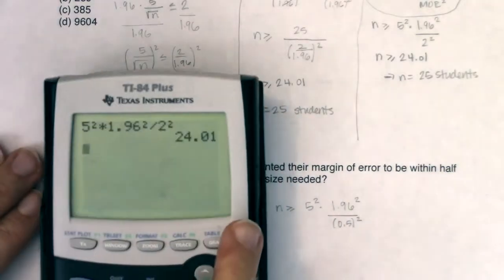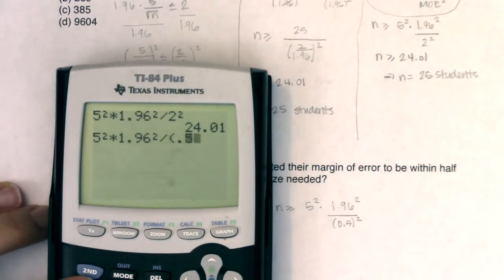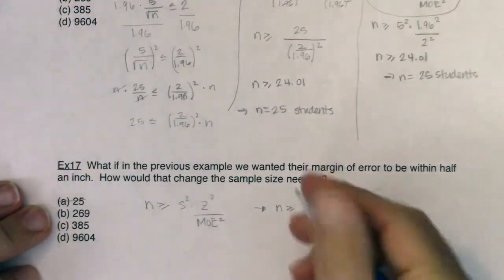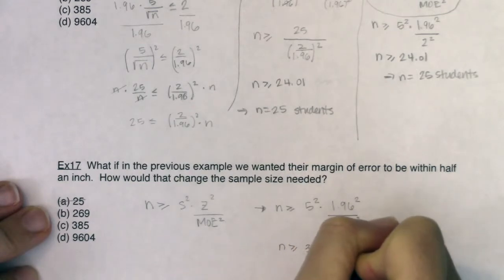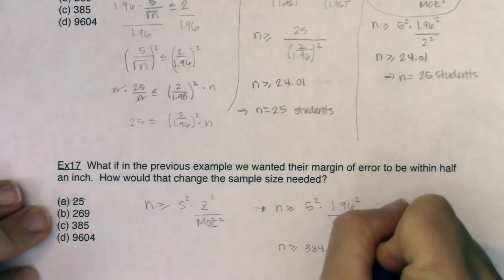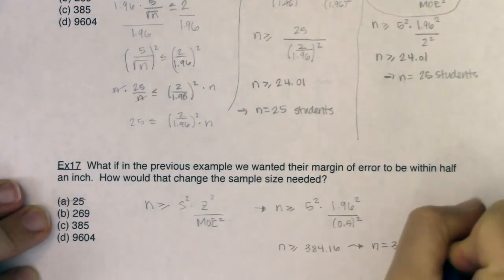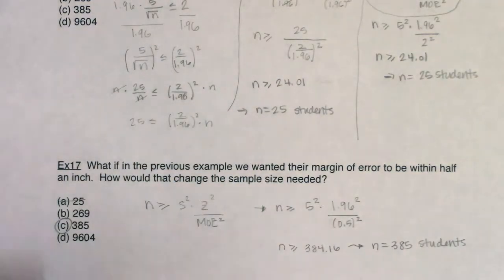So let's see what we've got here. So I'm going to now, let's change this a little. I'll put 0.5 in here, square it. And it looks like N has to be greater than or equal to 384.16. But we're still running up on that problem where it's got to be a whole number. So N has to be equal to 385 students.